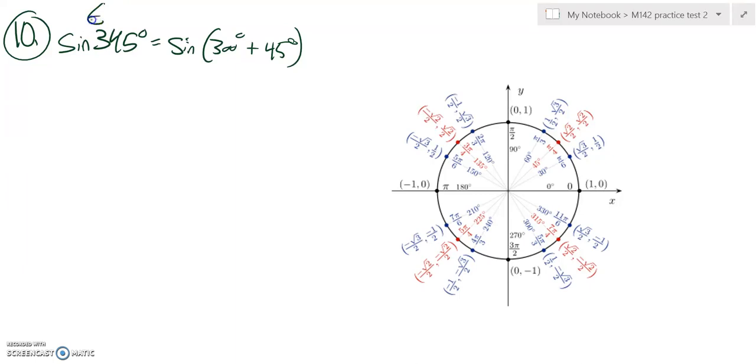And we're supposed to find the exact value of the sine of 345 degrees. And it even tells us how to break it up, 300 degrees plus 45 degrees.